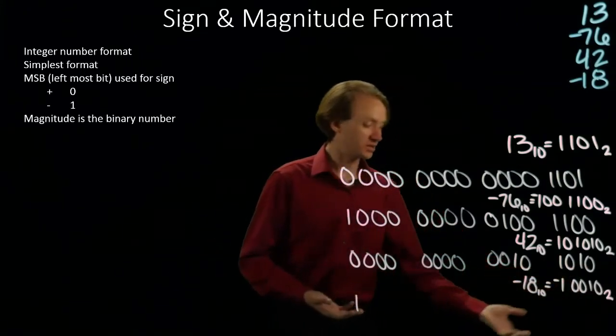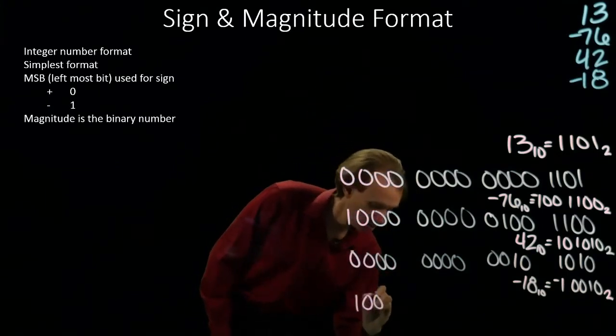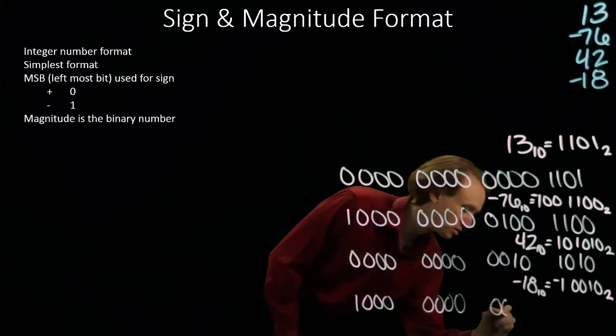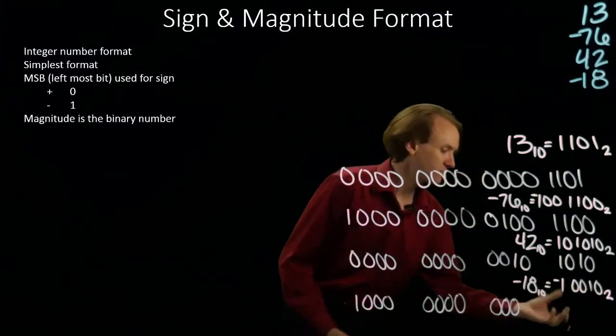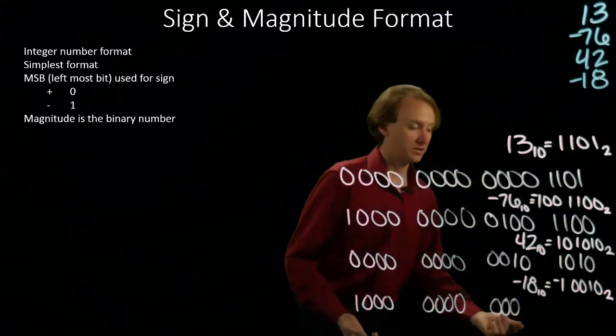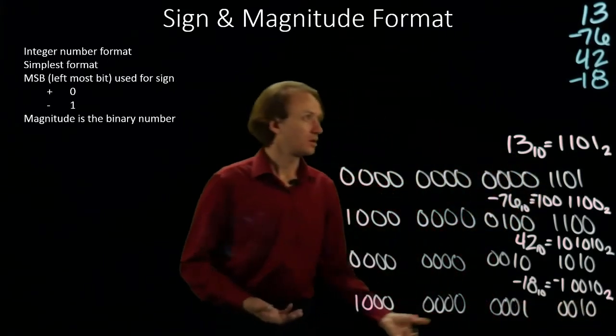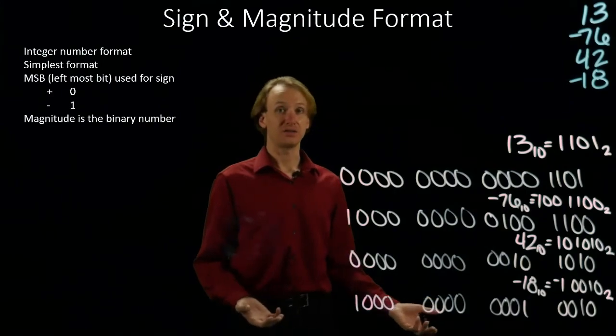And then I just need my magnitude. So I start with a number of leading zeros and then the actual precision of my magnitude. And there's negative 18 in sign and magnitude format.